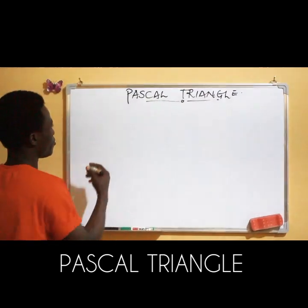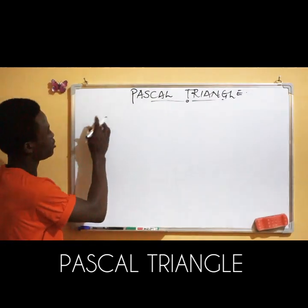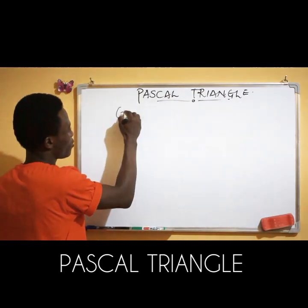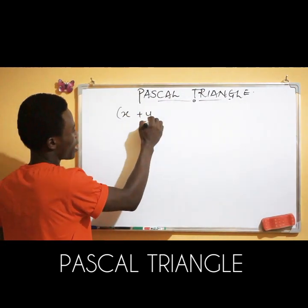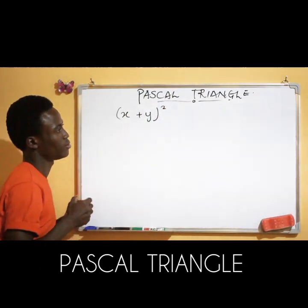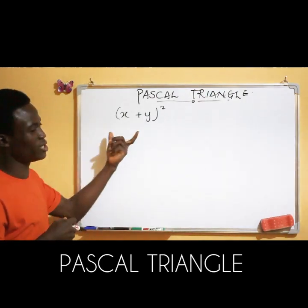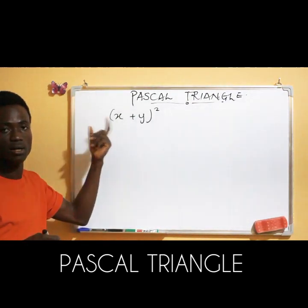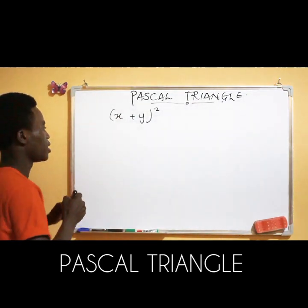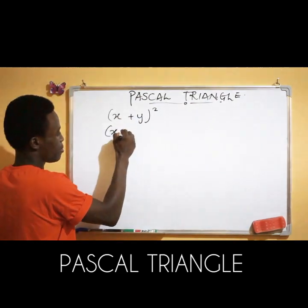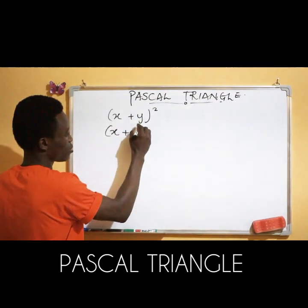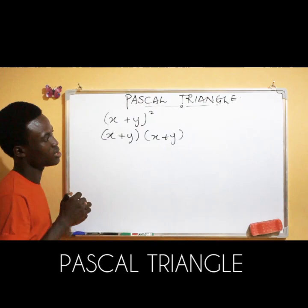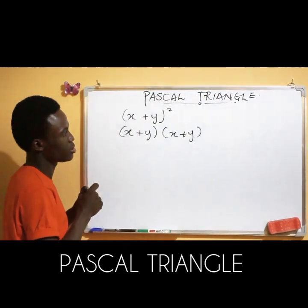So normally, from our basic knowledge of expansion, we already know that we have (x + y) to the power 2. This one can be easily expanded with the normal algebra knowledge. As you expand this, you write x plus y, times x plus y — so it means this is actually the expression written twice.